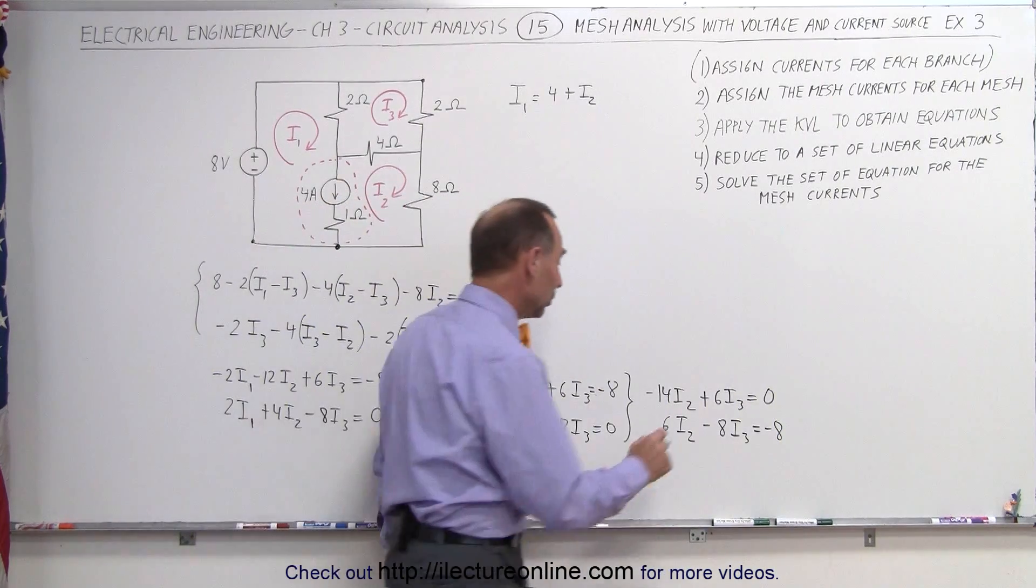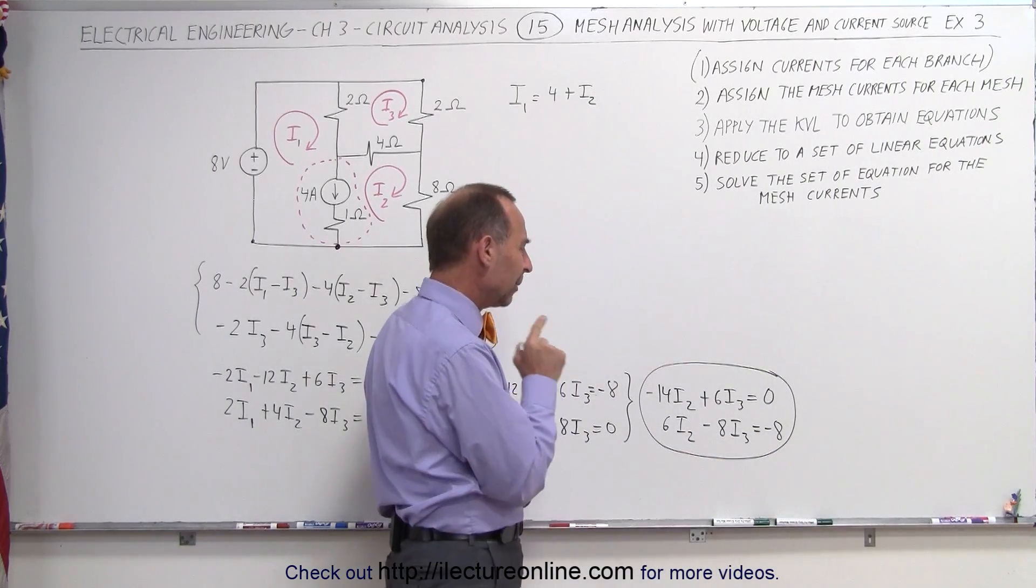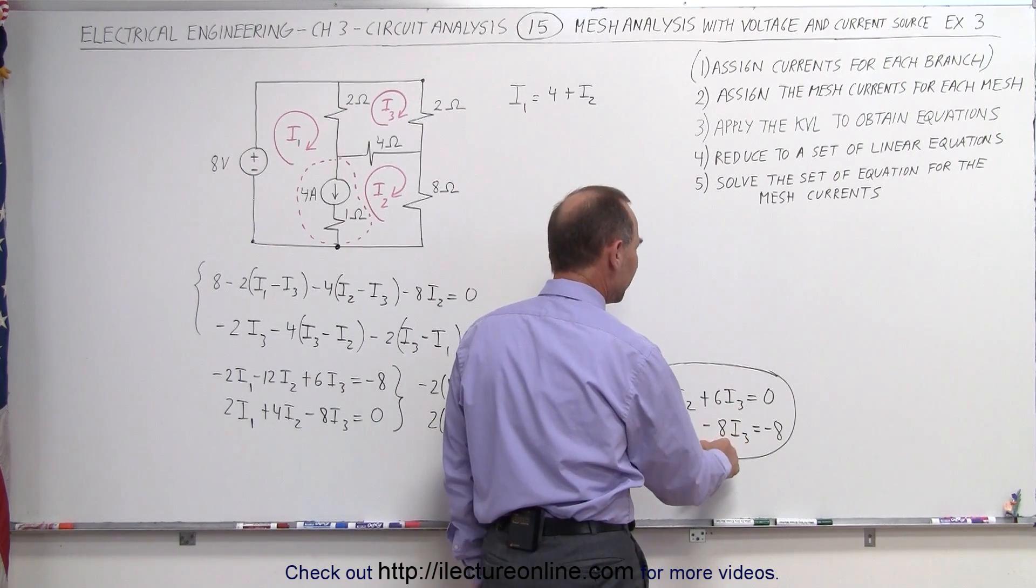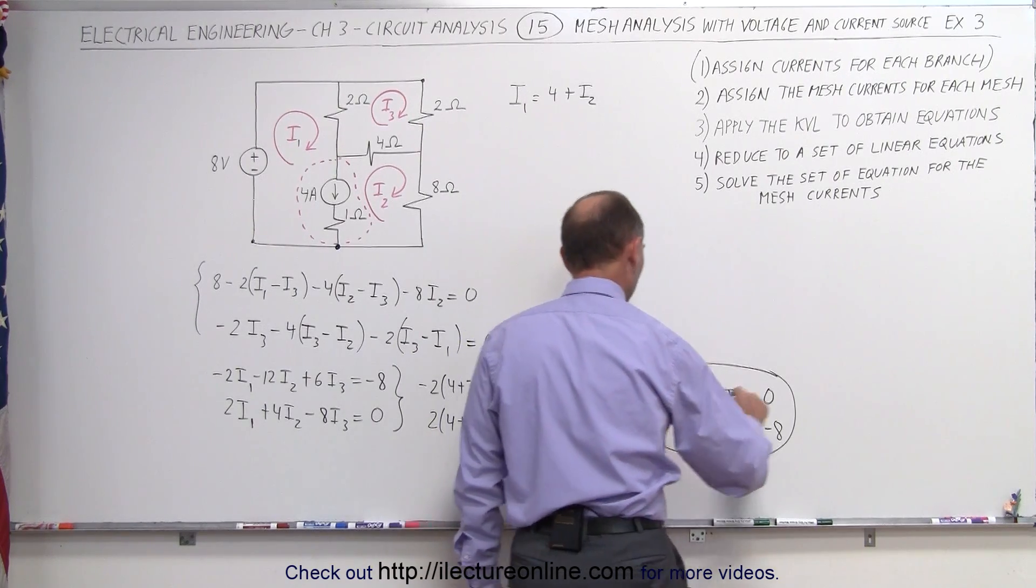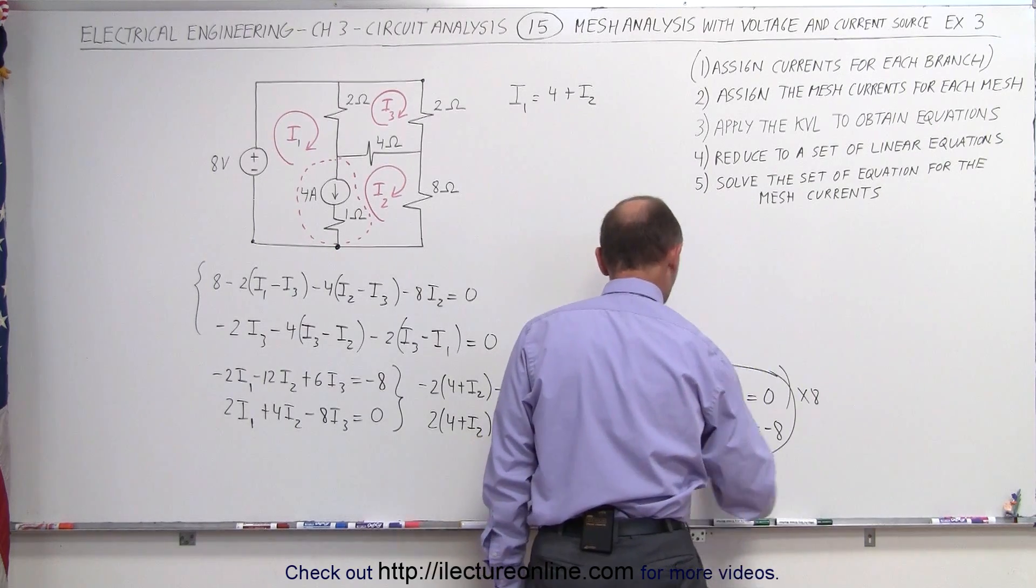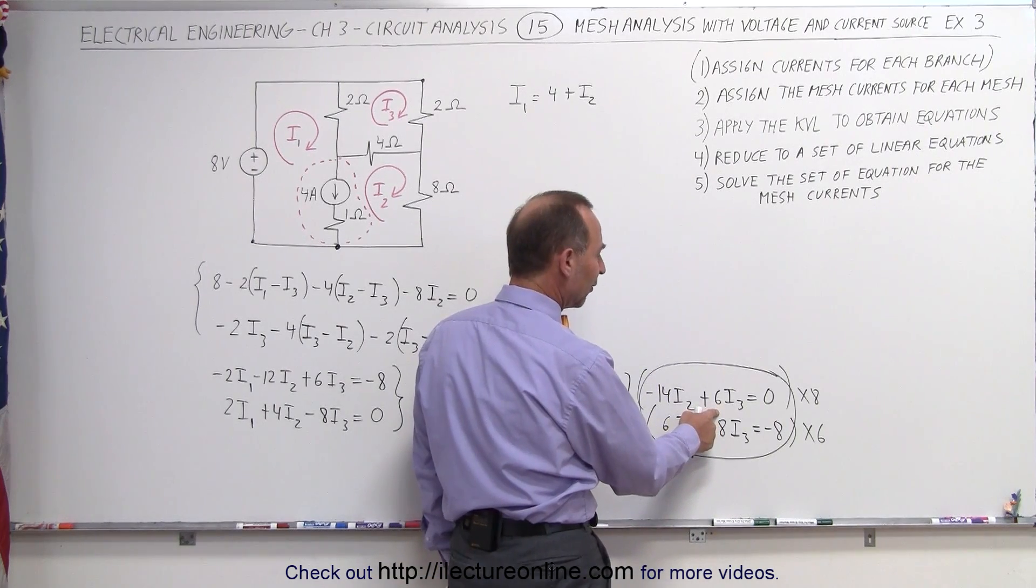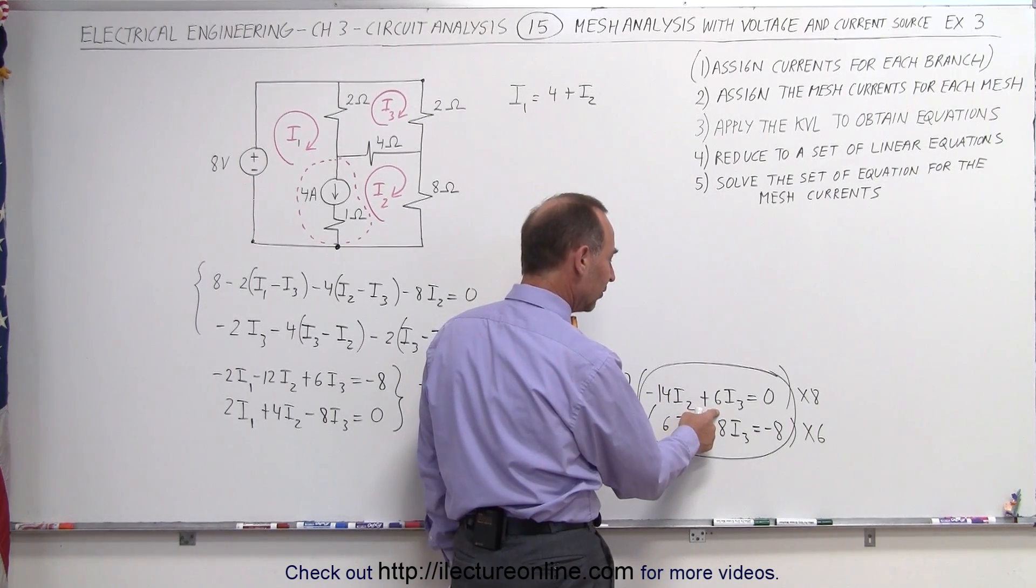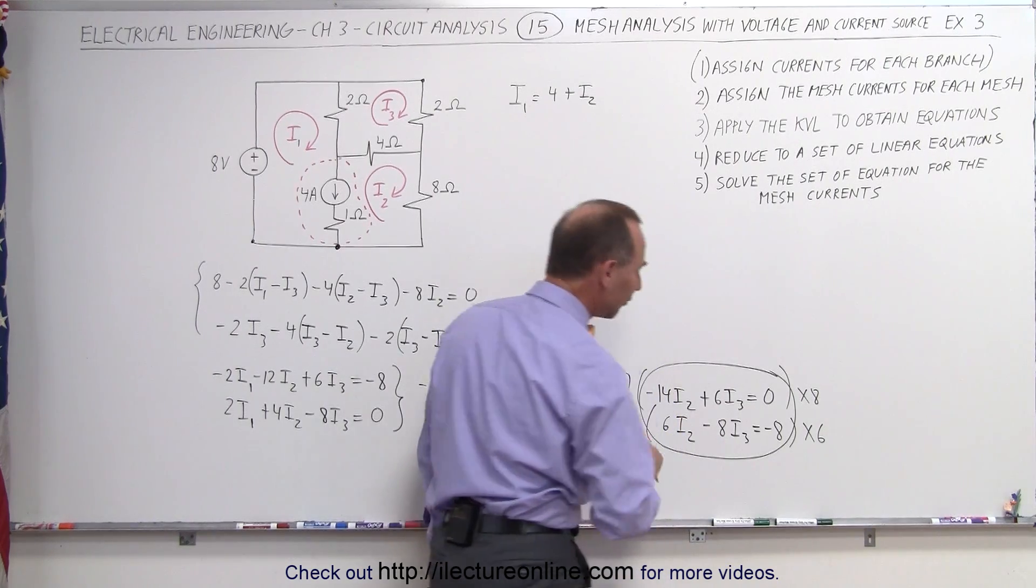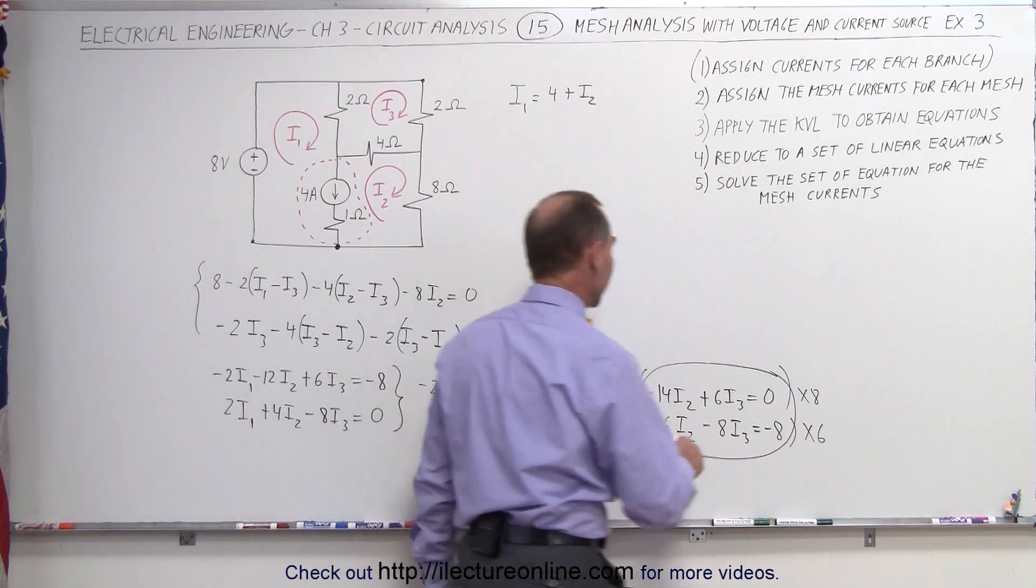Now I have two equations and two unknowns, which I should be able to solve. What I think I'm going to do is multiply the top by 8 and the bottom by 6. So I'm multiplying the whole equation, both left and right side, by 8 for the top one, and the bottom one I'm going to multiply times 6. I realize that this becomes a positive 48, 6 times 8 is 48, and this becomes a negative 48. I add those together, the I3s drop out.